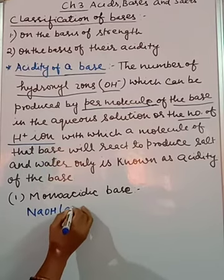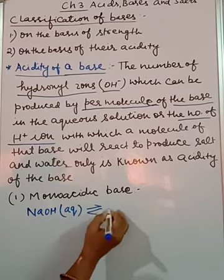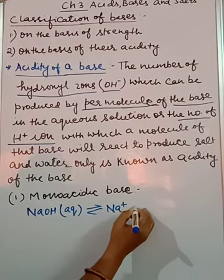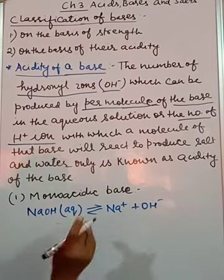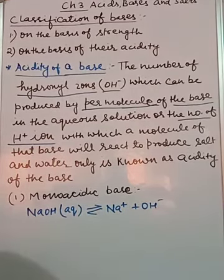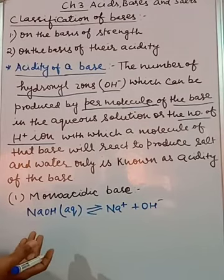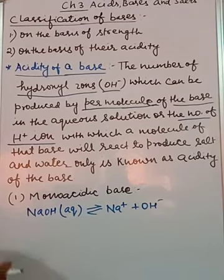For example NaOH. When we take this NaOH in aqueous form we will get one OH ion. At the same time when you take KOH, NH4OH, all will provide you the same.